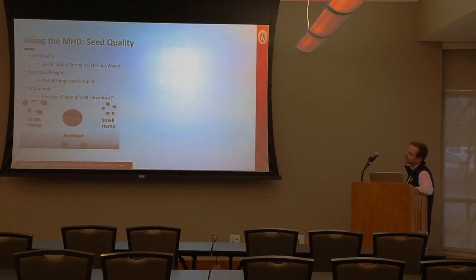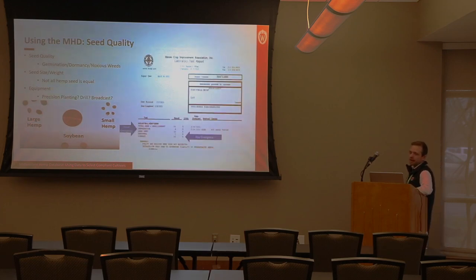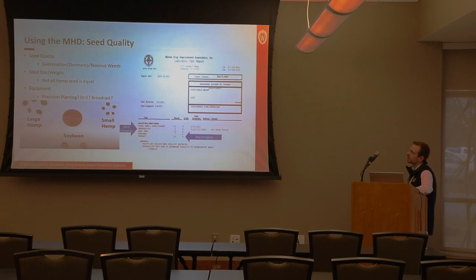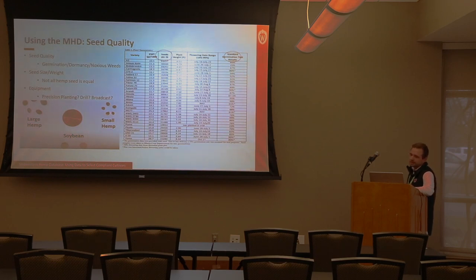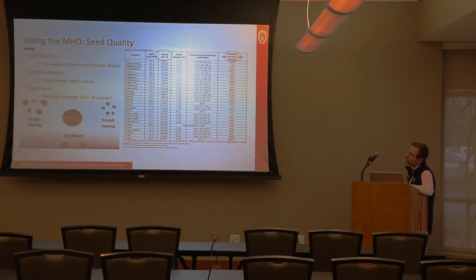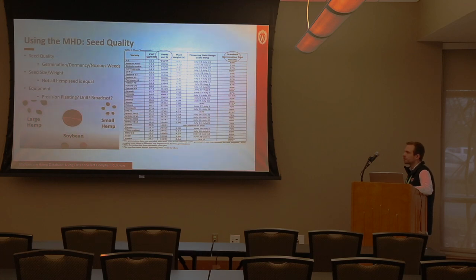Hemp seed quality is highly variable. Germination rates are typically poor, with high amounts of dormancy and sometimes noxious weed seeds found in seed samples — all accounted for in the database. Seed size also varies dramatically: some variety entries show seeds per pound that are nearly double or triple others, which is critically important when making seeding rate and planting recommendations. Germination performance also differs significantly between varieties, so all these factors must be considered when giving growers planting recommendations.